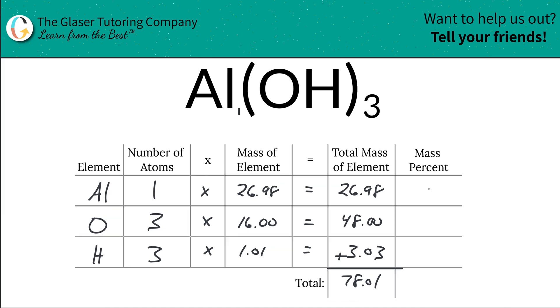So now all we have to simply do to find that mass percent is now we're going to take the total mass of that particular element and then divide it by the total mass of the entire compound. This is a basic percentage. It's part over whole. And then we're going to multiply it by 100. So we're simply going to take the 26.98, divide it then by the 78.01, multiply that by 100.